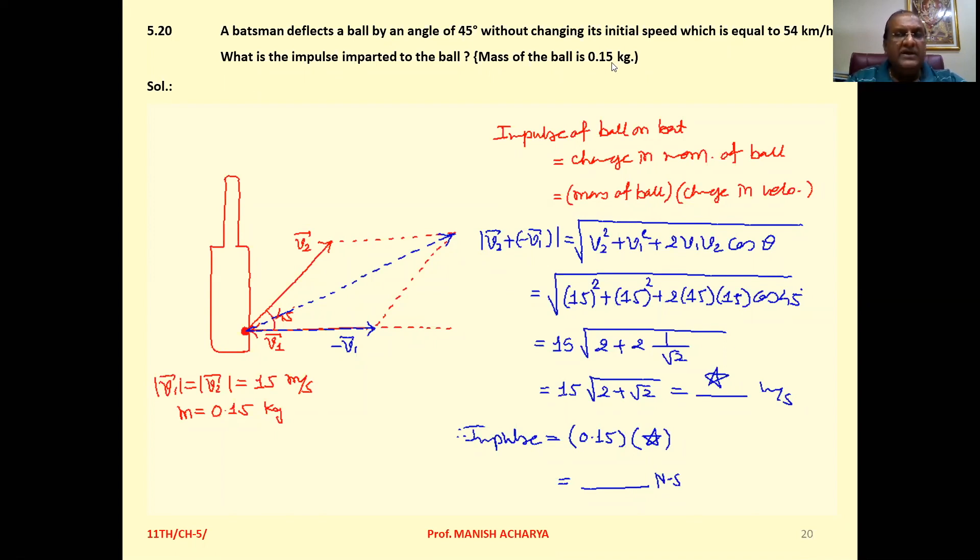Now if you want to calculate impulse, it implies that you have to calculate the change in momentum. Now see, here it is given to you without changing its initial speed. It implies that after hitting the ball, the velocity is the same magnitude wise. So magnitude of V1 equal to magnitude of V2 that is 15 meter per second. Mass of the ball that is 0.15 kg.